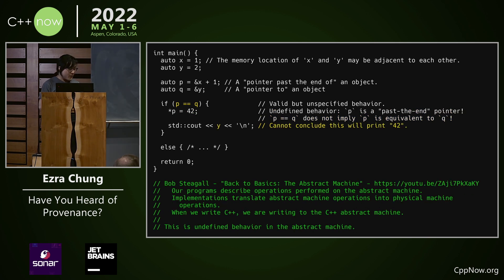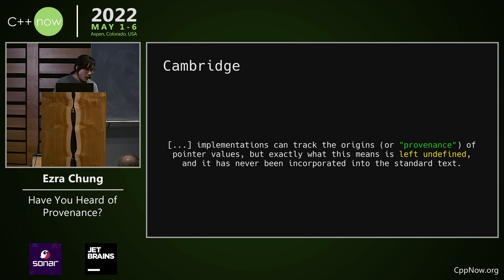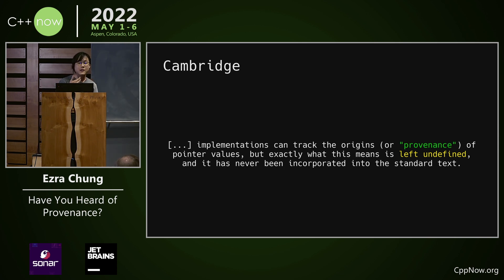A note about abstract machine behavior versus hardware behavior — I don't have time to discuss that, so I defer to Bob Stiegel's excellent CppCon 2021 talk instead. Up to this point, we are in happy standards land. However, as Cambridge states, implementations can track the origins or provenance of pointer values, but exactly what this means is left undefined and has never been incorporated into the standardized text.